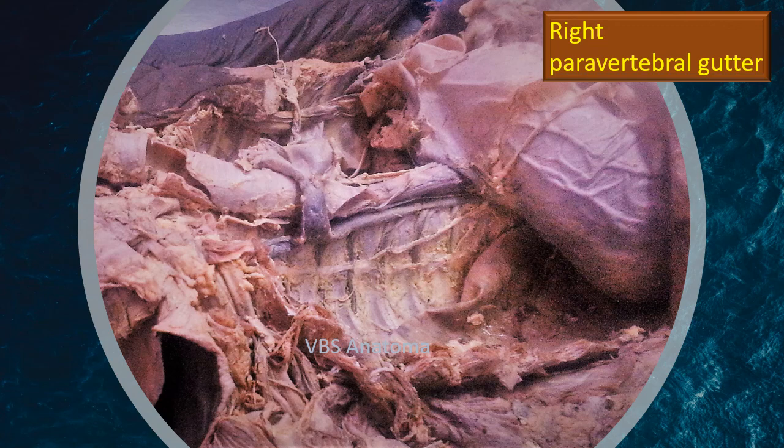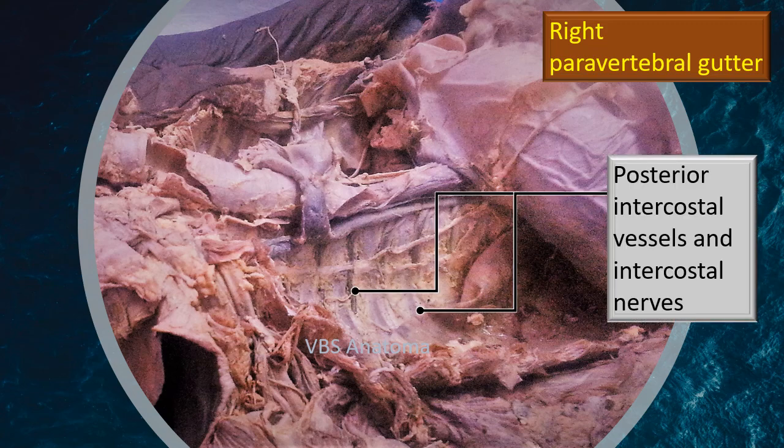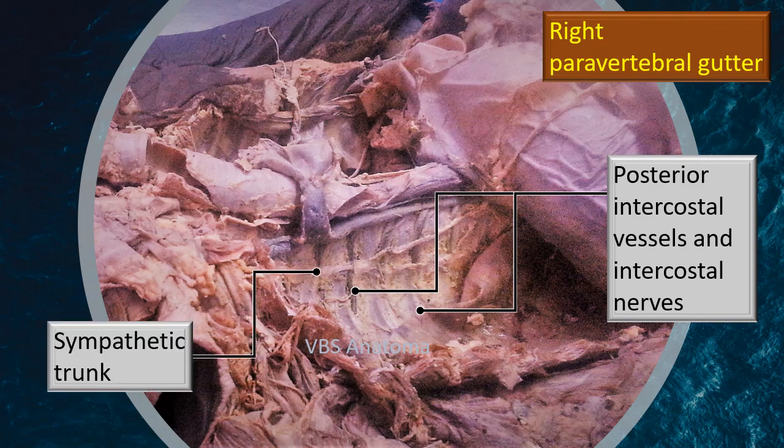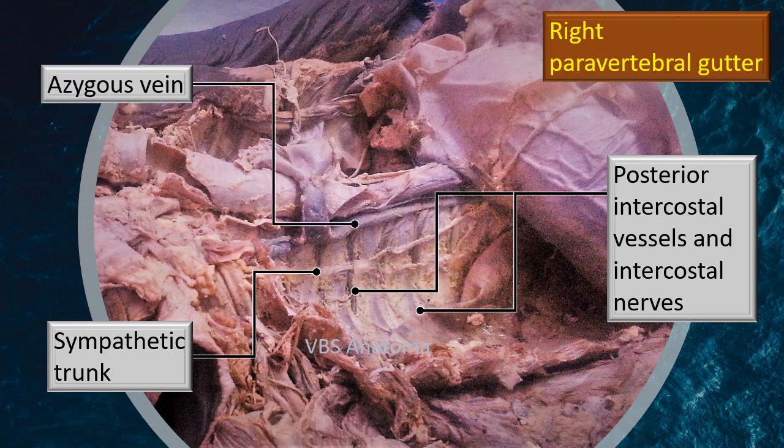This is the right paravertebral gutter, the opposite side. On the right side there is only one vein along the posterior mediastinum, the azygos vein — not the hemiazygos. The same posterior intercostal vessels and nerves are present, and the intercostal veins join the azygos vein. The sympathetic trunk is also seen on the right side. On the left side, the same single vein is divided into two parts: the upper part is the accessory hemiazygos and the lower part is the hemiazygos, and all the posterior intercostal veins drain into either of the two.